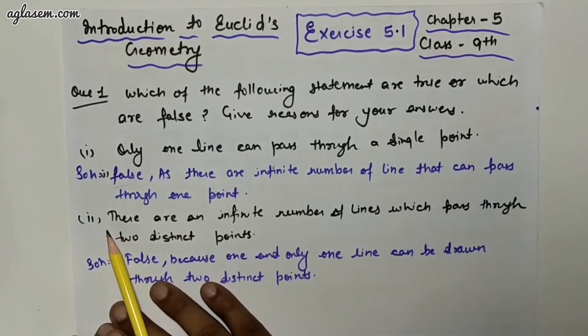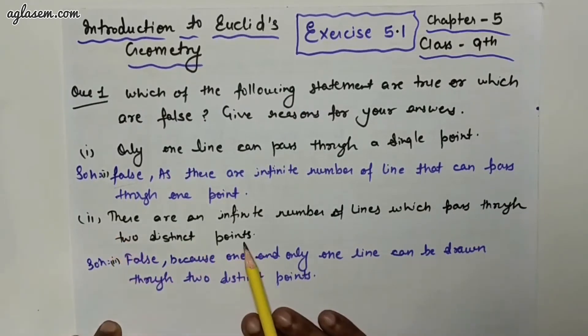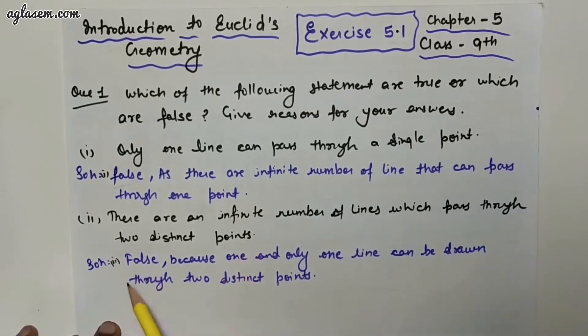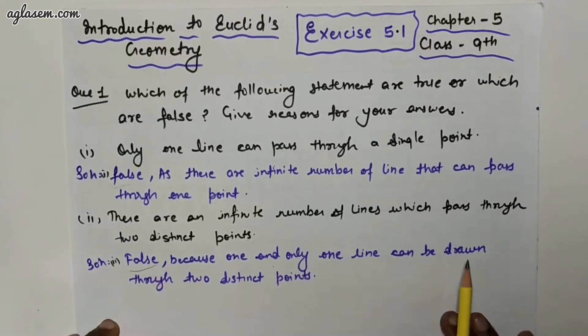The second part of question one: there are an infinite number of lines which pass through two distinct points. This statement is false, because one and only one line can be drawn through two distinct points.